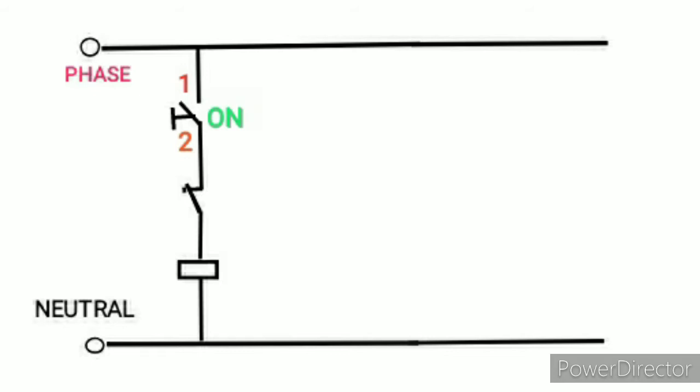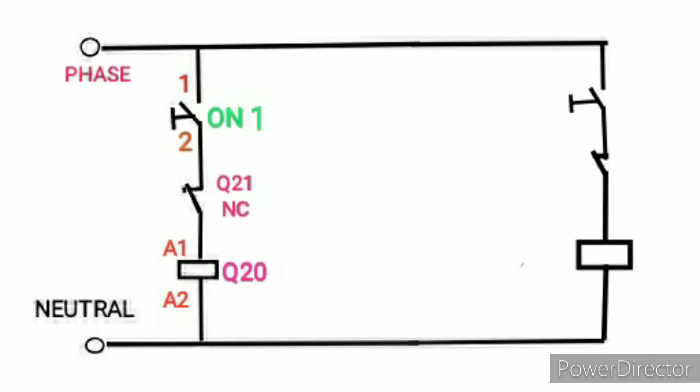Then I draw a contactor coil symbol. Then this one side logic is finished. I mentioned here contactor name and interlock NC name, the on push button, on push button number.